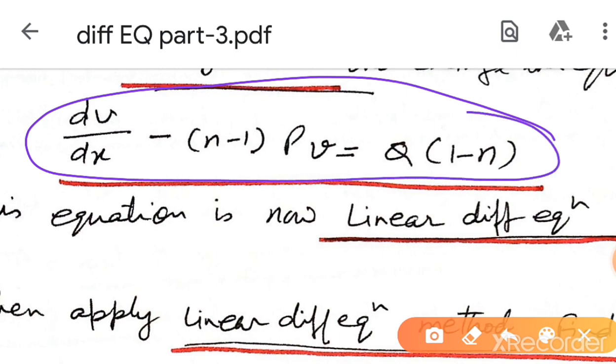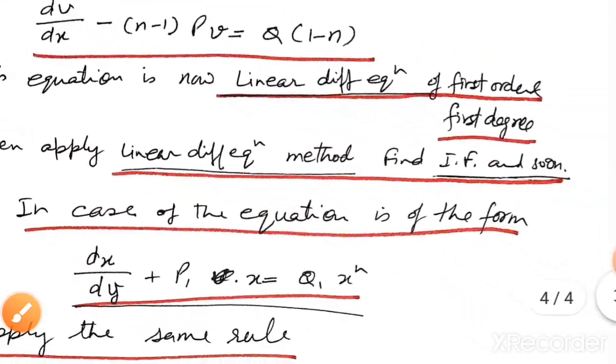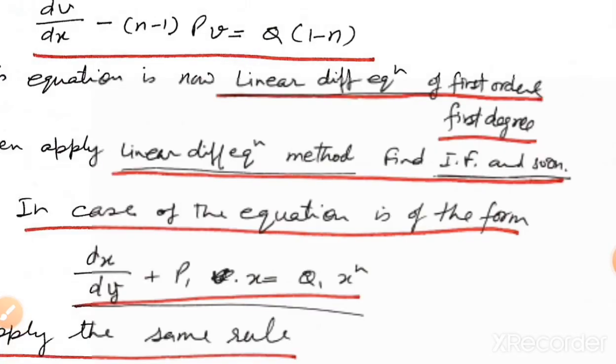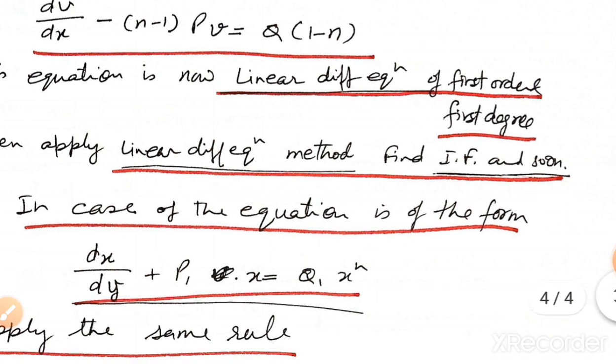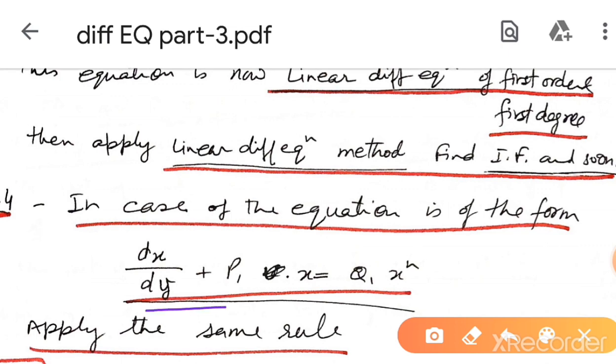Standard linear form in v and x. This is a form in x, with P and Q values. This is the standard linear equation of first order and first degree. For the second case: dx over dy plus p1 x equal to q1 x to the power n.